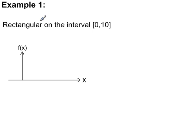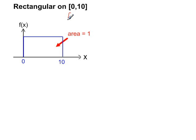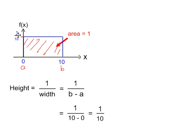Example 1: a rectangular probability distribution on the interval 0 to 10. f of x can never be negative, so on the y-axis we can have values all the way down to 0, but not negative values. The random variable x can be positive or negative; in this case x takes values between 0 and 10. So for the area to equal 1, the height is given by the formula where a is 0 and b is 10, giving a height of 1 tenth.